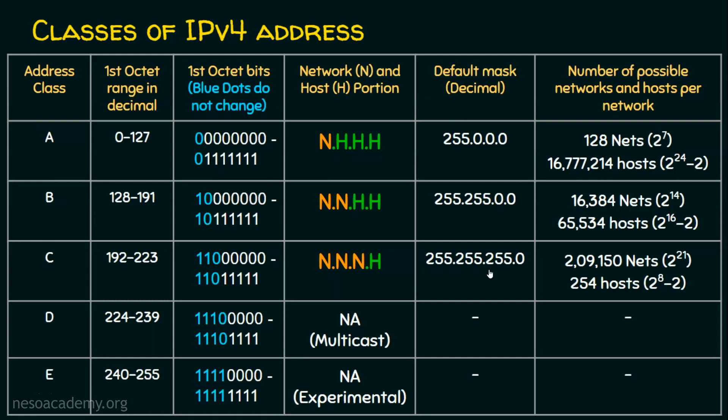This subnet mask tells us who are all our neighbors in the network. The IP address basically contains two pieces of information: the network portion and the host portion. Which is the network portion and which is the host portion cannot be determined with just the IP address alone. We need a companion, which is the subnet mask. By default, every class has its own subnet mask — class A, B, and C each have their own subnet mask.